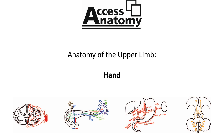Podcast 10 of the Upper Limb Series: The Hand. This podcast is going to detail the anatomy of the hand, including the musculature, its innervation and movements. Before detailing the anatomy of the hand, it would be a good idea to briefly review the osteology, the joints and the movements of the hand.